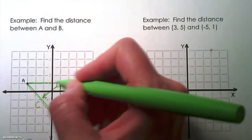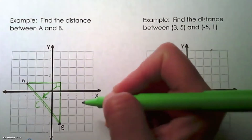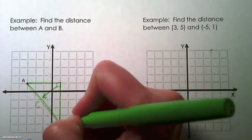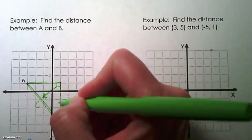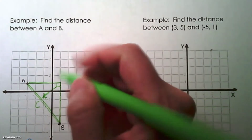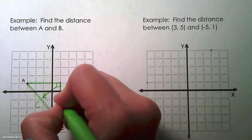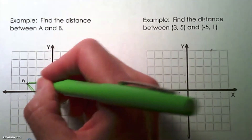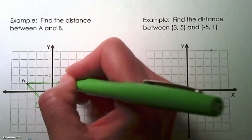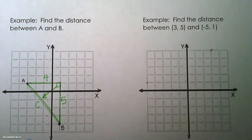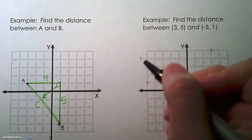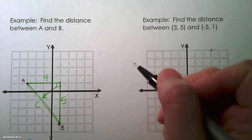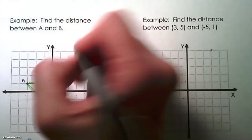We can count the length of the vertical segment and the horizontal segment. The vertical segment counts to 5, and the horizontal segment counts to 4. We're going to use those measurements in the Pythagorean theorem to solve for C.